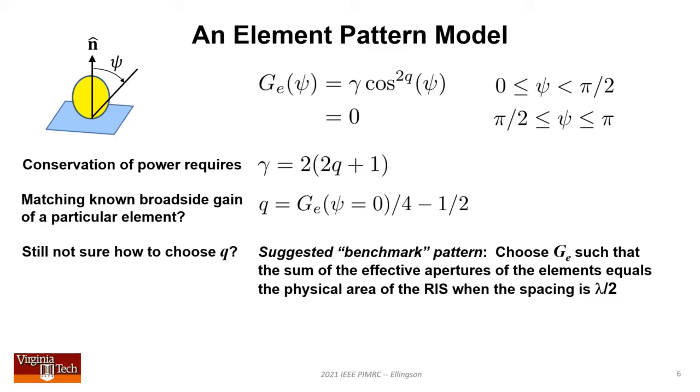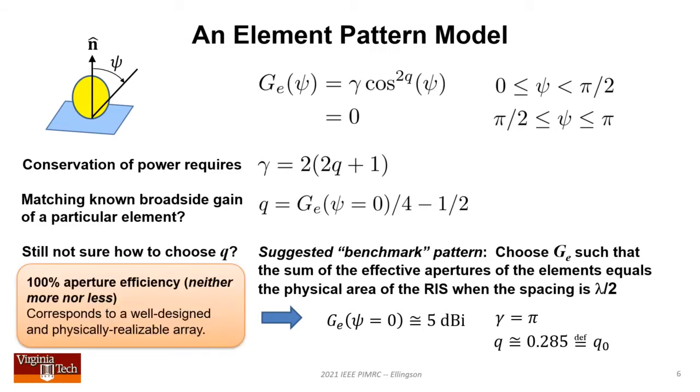I have a suggested benchmark pattern: choose G sub E such that the sum of effective apertures equals the physical RIS area when element spacing is lambda by 2. You get broadside directivity of 5 dBi, very typical for a patch. Gamma is pi, q is 0.285, which I call q sub 0. This is useful as a benchmark because the resulting RIS scatters with 100% aperture efficiency. All power incident on the surface gets re-radiated.